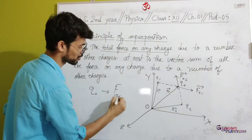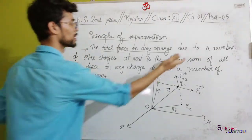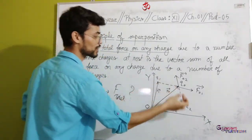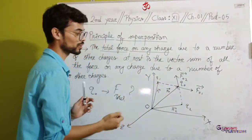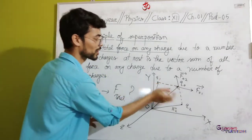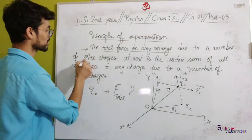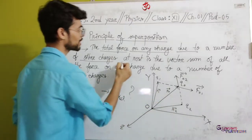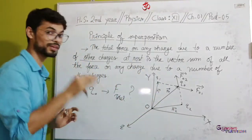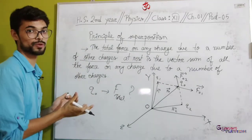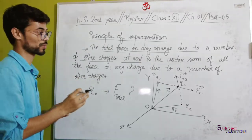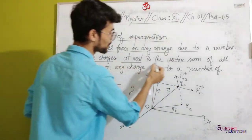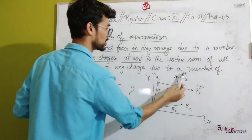The total force on any charge due to a number of other charges. The total force on Q0 due to a number of other charges — Q1 and Q2. This is a branch of physics called electrostatics, where we discuss the position of charges.